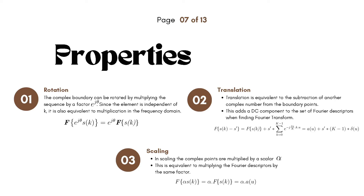Next is translation. A complex point can be translated by subtracting another complex point from it. The set of complex points s(k) can be translated by a distance (x̄, ȳ) by subtracting a complex number s̄, which equals x̄ plus iȳ, from the set. When we calculate the Fourier transform of this translated set of points, it equals the Fourier transform of s(k) plus s̄ times a summation equal to the sum from k=0 to K-1 of e^(−j2π·k·u/K). This summation equals K when u equals 0 and 0 otherwise. Thus in the frequency domain, we obtain a DC component whose value equals s̄ times K, which only affects the first Fourier descriptor a(0).